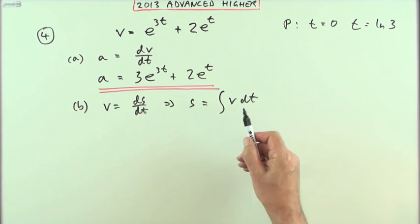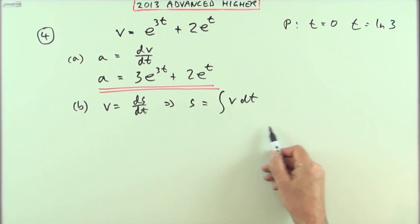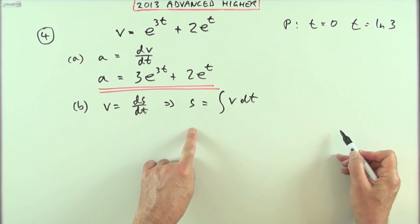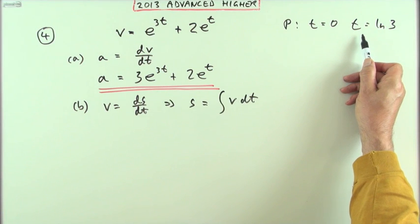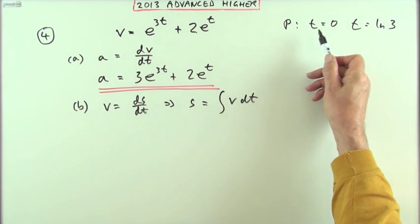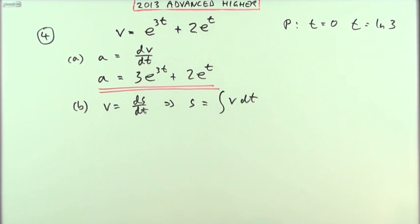So you could either do it that way, you could integrate that, get the formula for the distance with a constant in it, work out the distance at time ln3, work out the distance at time 0, and subtract them, and that would do. And I'll do that first.